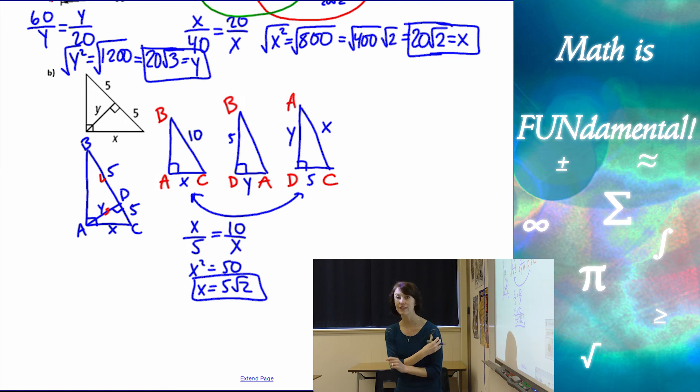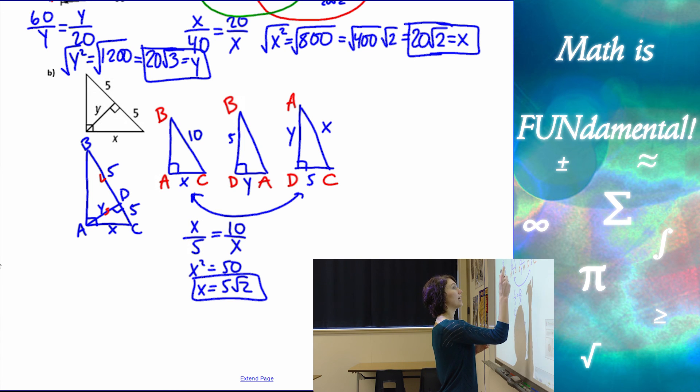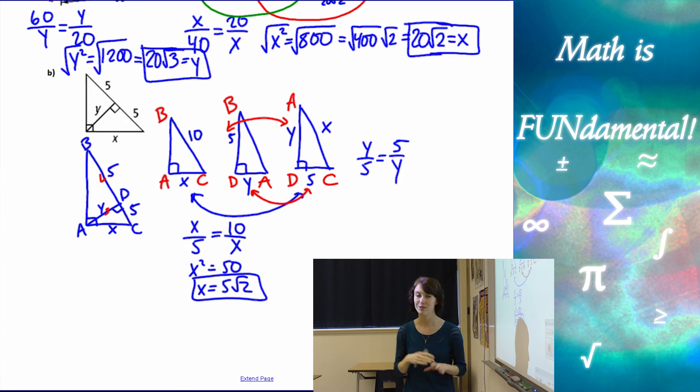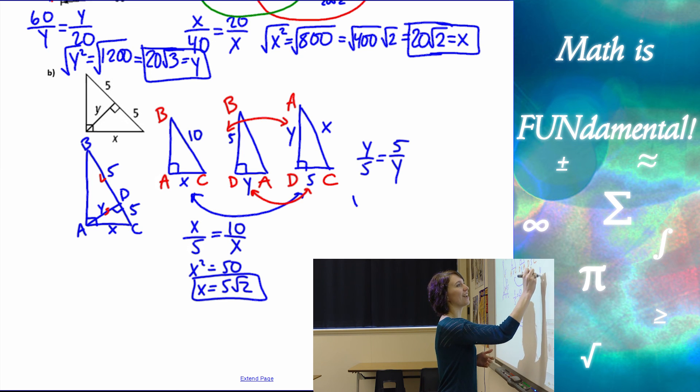And then let's solve for Y. So now we're going to take these two triangles. We've got Y over five equals five over Y. We don't want Y over five equals Y over five or we'll end up with nothing useful. Y squared equals 25. So Y has to be five.